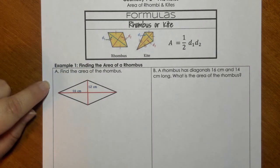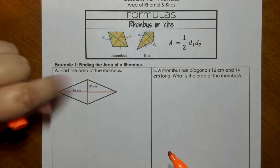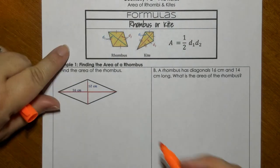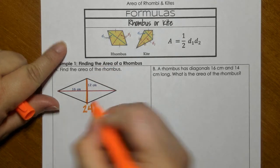For this first problem, it tells you it's a rhombus. If this piece is 12, then you know that the whole thing is 24.